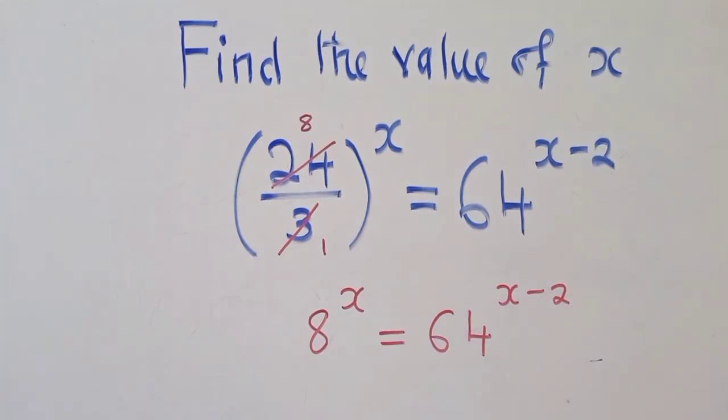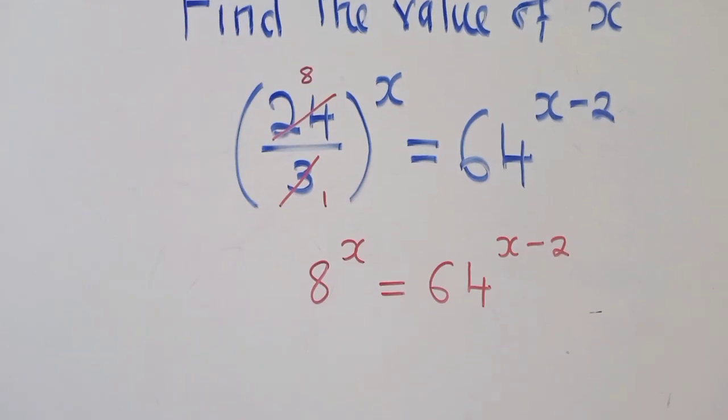Have we balanced the bases? This is a question which we must be asking ourselves. Have we balanced the bases? Not yet. You can see we've got 8 here and we've got 64. So what do we do in order for us to balance the bases?